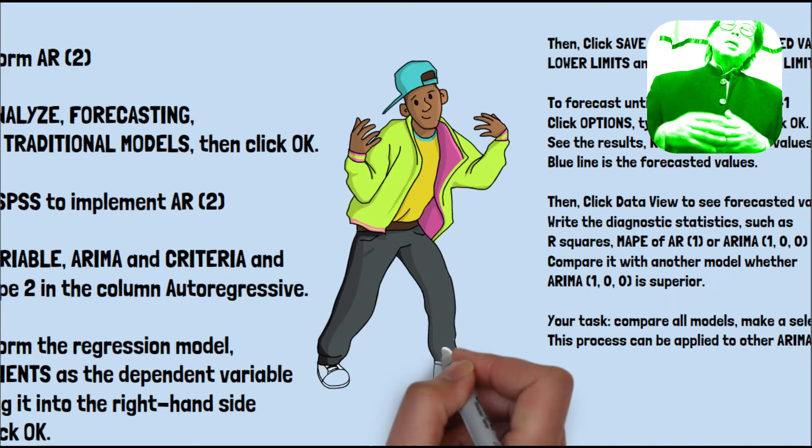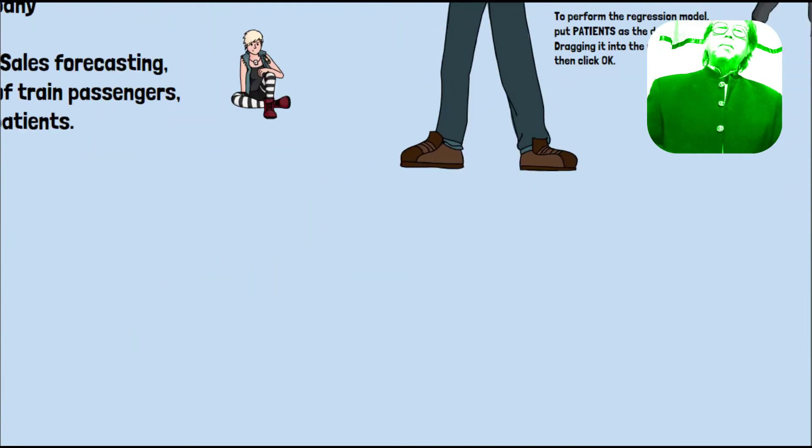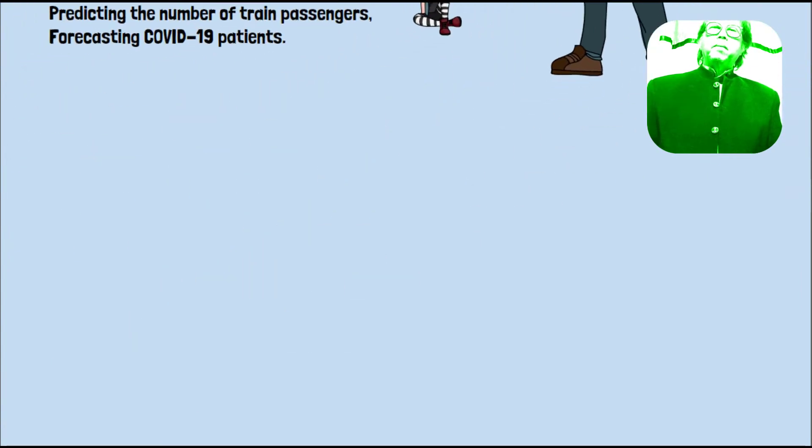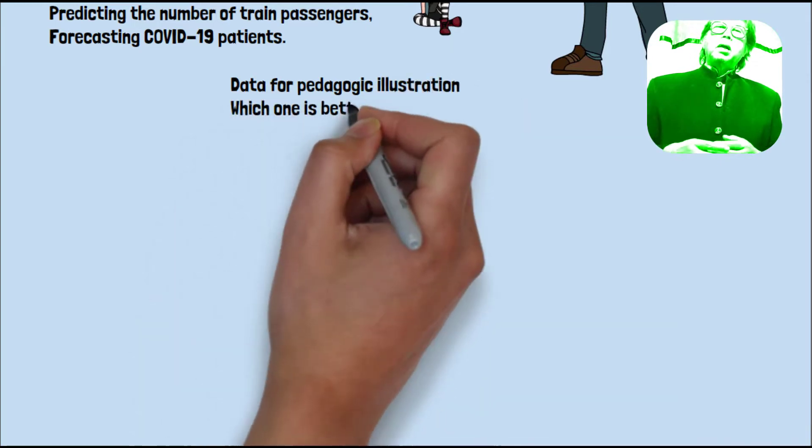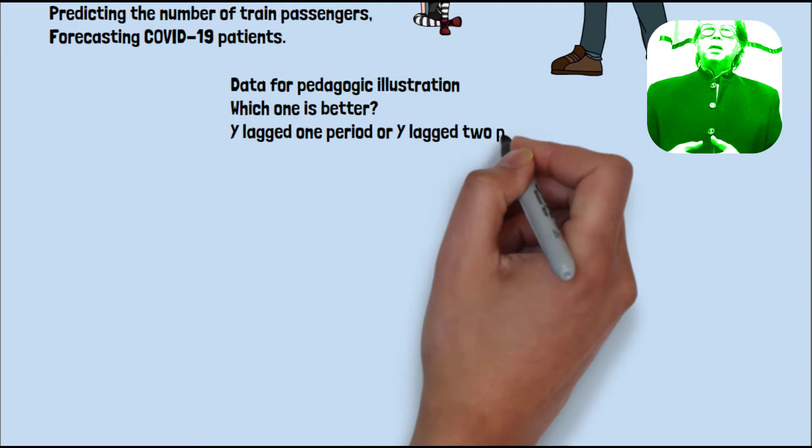So the process can be applied to other ARIMA models. For pedagogic illustration, I include the data. Which one is better?